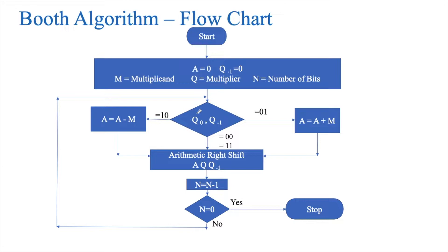Here is the Booth's algorithm flowchart where we start and do some initializations: register A should be made 0, Q minus 1 to 0. M will be loaded with the multiplicand, Q with the multiplier, N with the number of bits. We then consider two bits — Q naught and Q minus 1. If these two bits are 0,0 or 1,1 we perform an arithmetic right shift of A, Q, and Q minus 1, then reduce N by 1 and check whether N equals 0. If yes, stop; if no, continue.